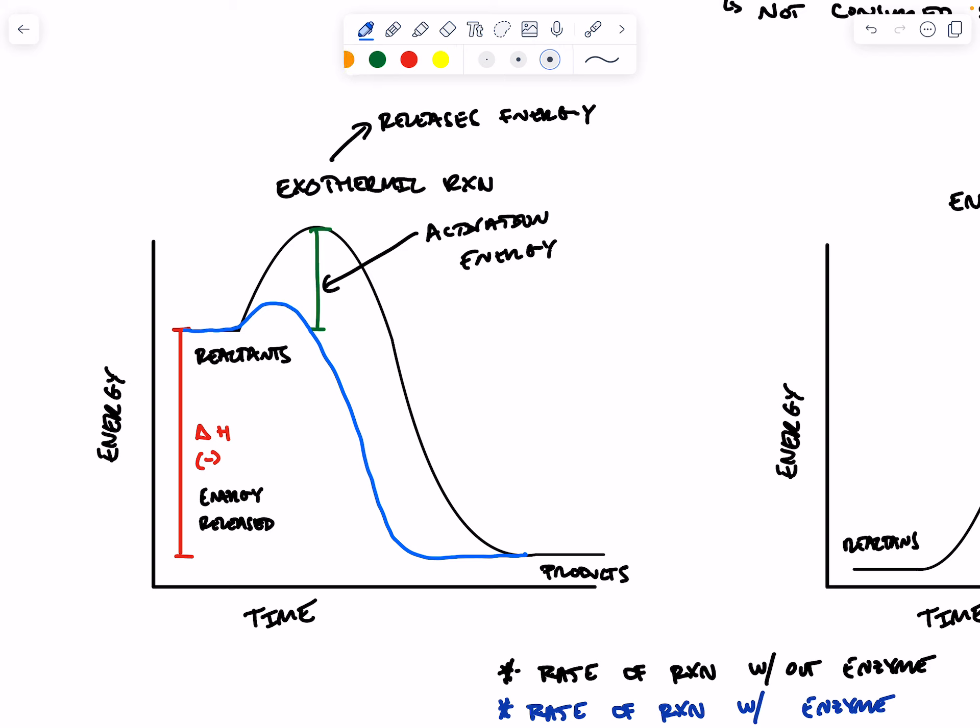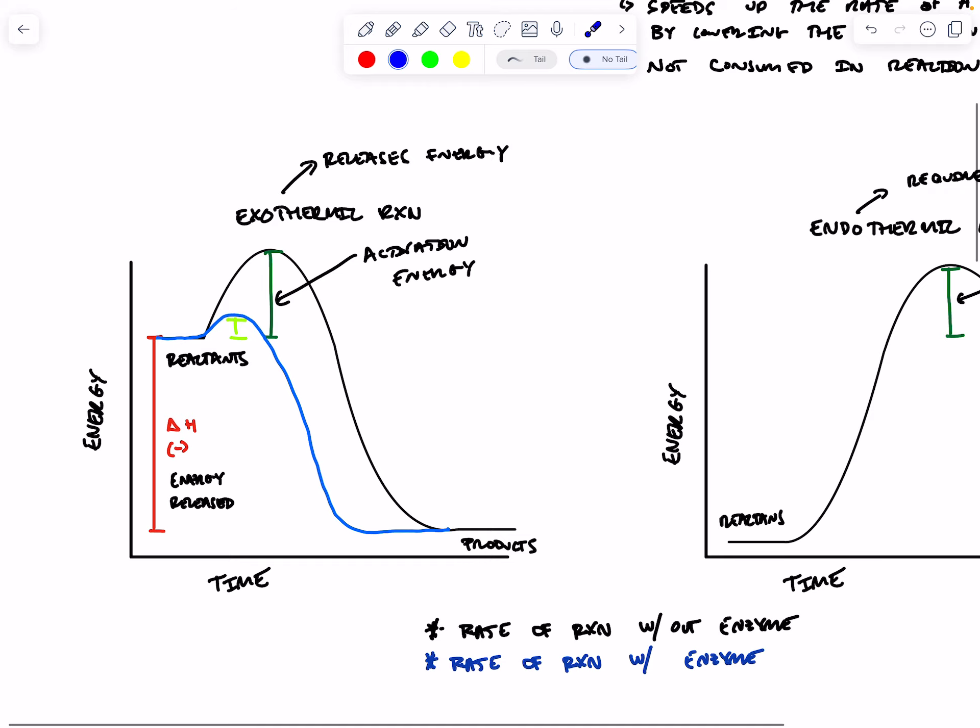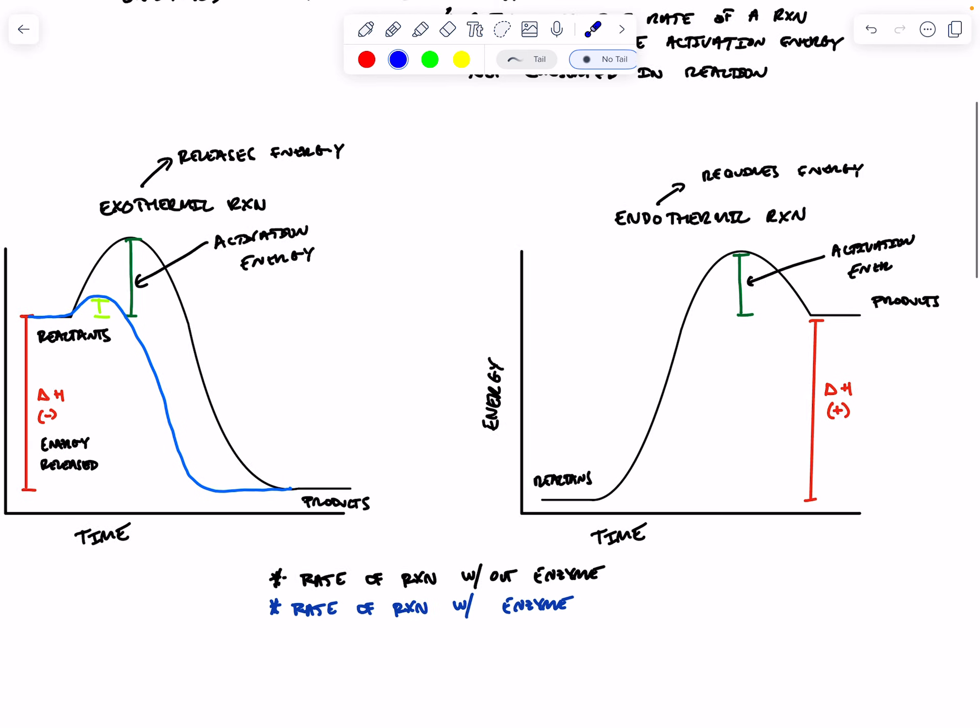If we were graphing out an endothermic reaction, it's going to look something like this. The reaction is going to proceed faster because it has a lower activation energy here.